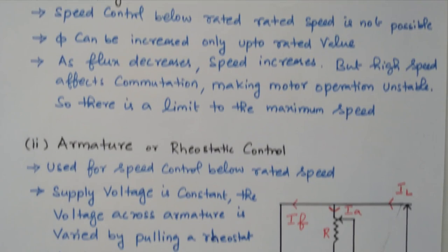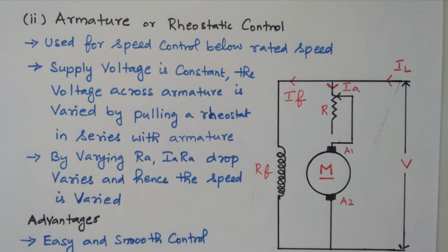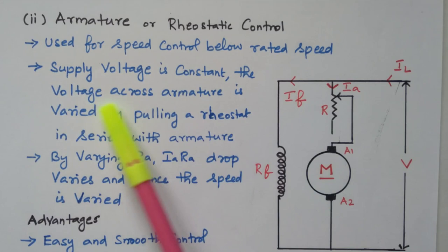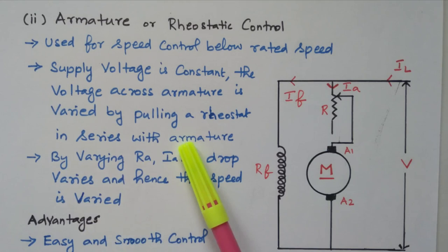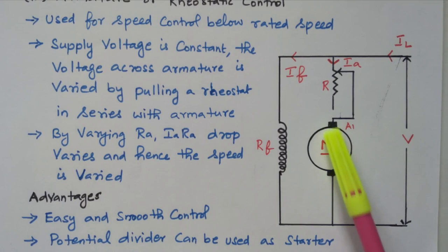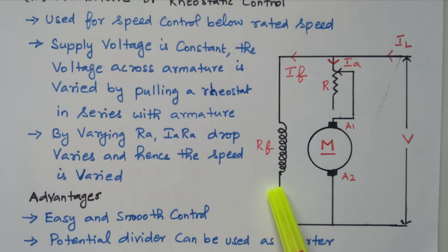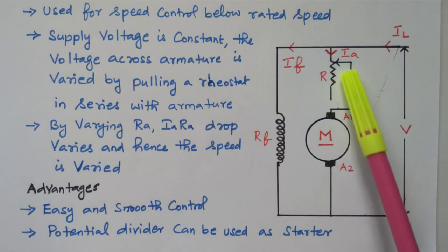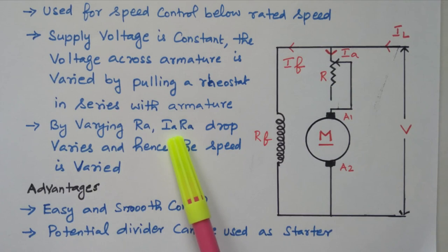Now we will go to the second method: armature or rheostatic control. The second method varies the IA RA armature resistance drop. Refer this diagram. This method is used for below rated speed. The supply voltage is constant and voltage across the armature is varied by putting a rheostat in series with the armature. In the previous case, the rheostat was connected in series with the field winding; now it is connected to the armature winding. The rotating part armature A1 and A2 is shown; the rheostat is connected in the armature circuit. By varying this, we can vary the current flowing through the armature.